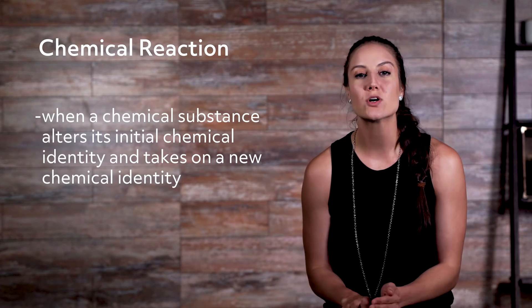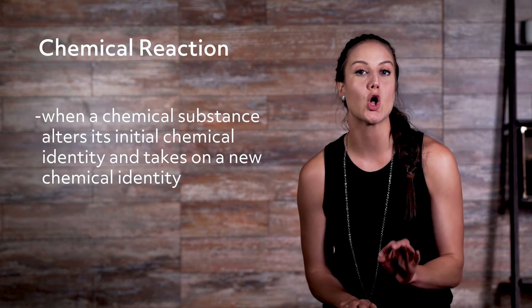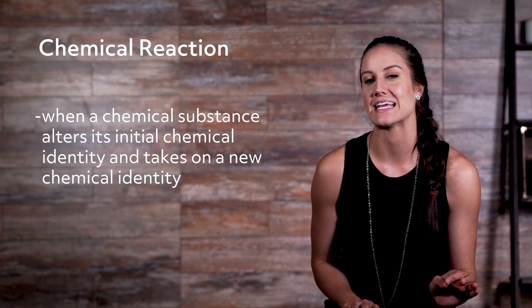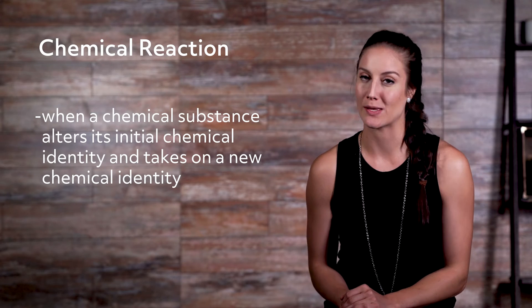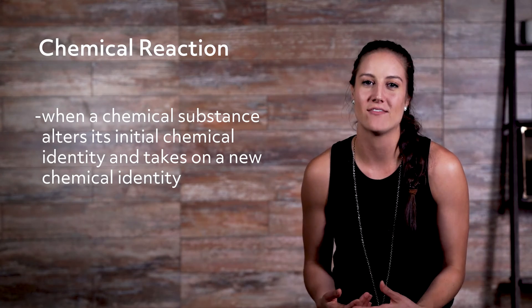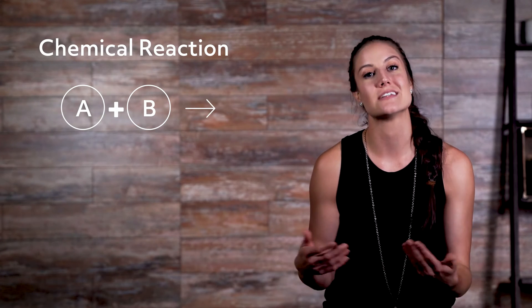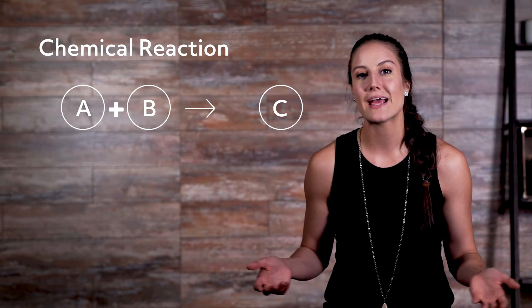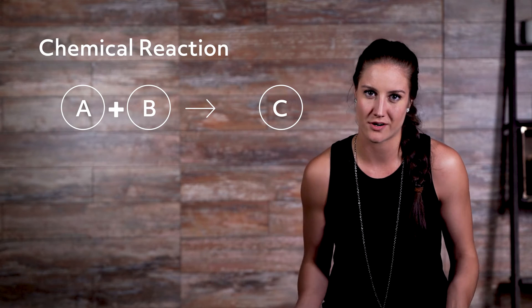First, the definition. A chemical reaction has taken place when a chemical substance alters its initial chemical identity and takes on a new chemical identity. Basically, what's happening is you have at least two molecules that come together perfectly, hitting each other in the exact right way, and they change into something else. That's typically how all types of reactions work.